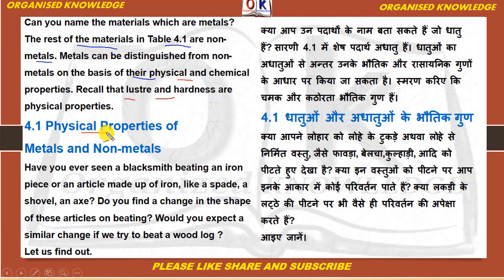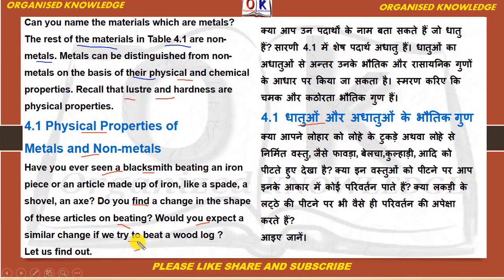We will do the physical properties of metals and non-metals first. Dhatu aur adhatu ke bhotik guna-dharam. Have you ever seen a blacksmith beating an iron piece and an article made up of iron, like a spade or shovel? Aap ne dekha hoga ki jo lohaar hote hain — blacksmith — woh kya karte hain? Woh iron ke lohe ke tukde hote hain, ya unse bani hoi jo bhi chizein hoti hain — articles hote hain jaise ki fawada, belcha, kulhari — in sab ko peette hue aap ne zaroor dekha hoga. Let's find out this ke baare mein jaan lete hain ki aisa kyun hai.